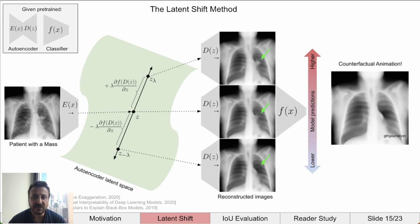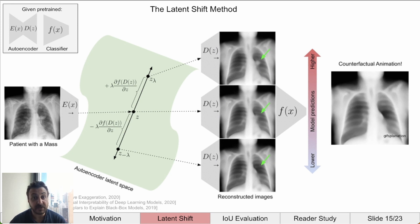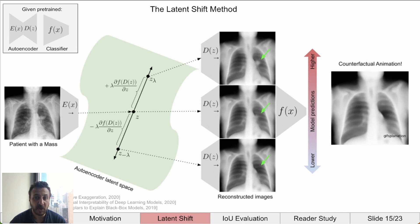One thing to keep in mind is that we want the exact opposite of an adversarial attack, but we are using the same idea. We want to perturb the input image so that the classifier reduces its prediction. If we just compute df/dx and move the pixels directly, we will get an imperceptible difference, just like an adversarial attack. Using a decoder, we can regularize the transformation so that it will only yield valid images.